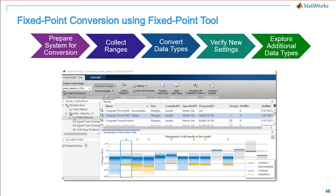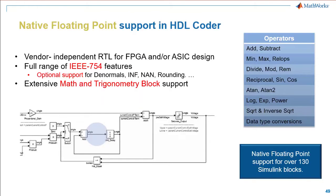This data conversion is automated with the Fixed Point Designer tool, which will gather the range and coverage of the design and recommend fixed point data types, keeping the accuracy and maximizing precision. When high dynamic range calculations are required, making it challenging to efficiently convert to fixed point, HDL code generation supports floating point to generate VHDL or Verilog.